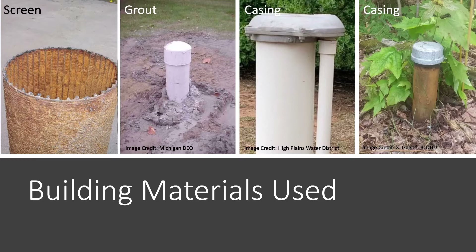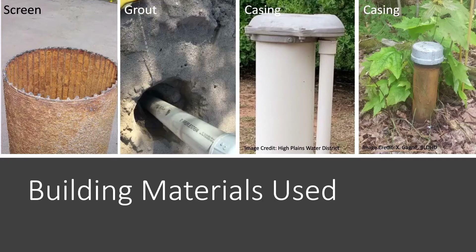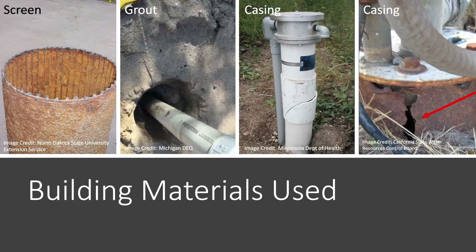Grout is used to seal the space outside of the casing. Improper grouting may result in soil collapse and provide a pathway for runoff to get into the well. The casing prevents leakage into the well from the surrounding formations, and cracked or corroded casing can provide a pathway for contaminants to enter your well.